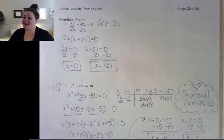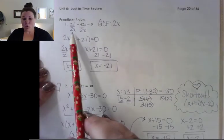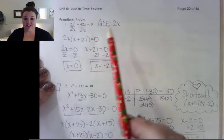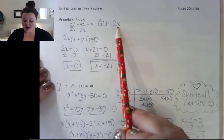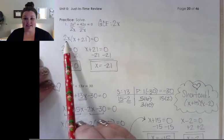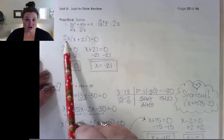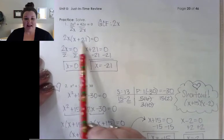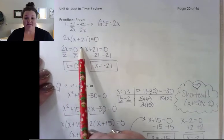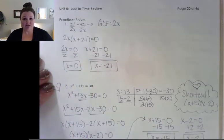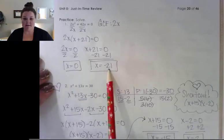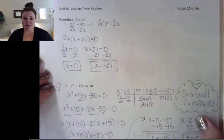Let's see how you did. On number one, the first thing to do is take out a greatest common factor of 2x. Make sure, even though you're dividing it off, you write it out because that's one of our factors we have to solve. If we take out 2x, we're left with x plus 21, and now it's fully factored. Setting each factor equal to 0 and solving gives us the solutions 0 and negative 21.